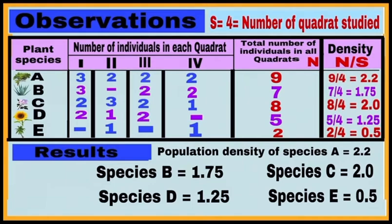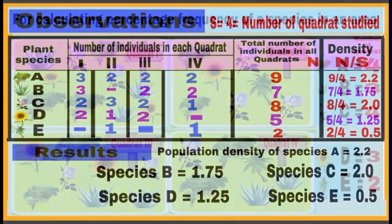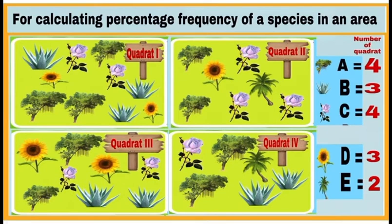In the last column, calculate the population density of each species using the formula N divided by S. Here N is the number of individuals and S is the number of quadrats studied, which equals 4. The results are: population density of species A = 2.25, species B = 1.75, species C = 2.0, species D = 1.25, and species E = 0.5.